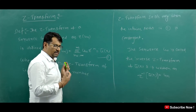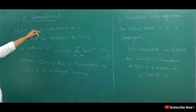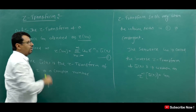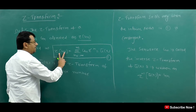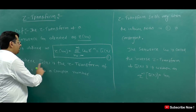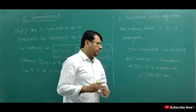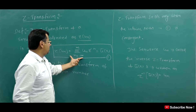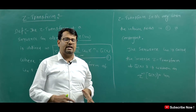I am going to tell you about some concepts and questions. First, the definition: the Z-Transform of a sequence u(n), denoted by Z{u(n)}, is defined as the summation from N equals minus infinity to infinity of u(n) times Z to the power minus N, equal to U-bar(Z). Z-Transform exists only when this infinite series is convergent. If the series is not convergent, we cannot find the Z-Transform of any sequence.